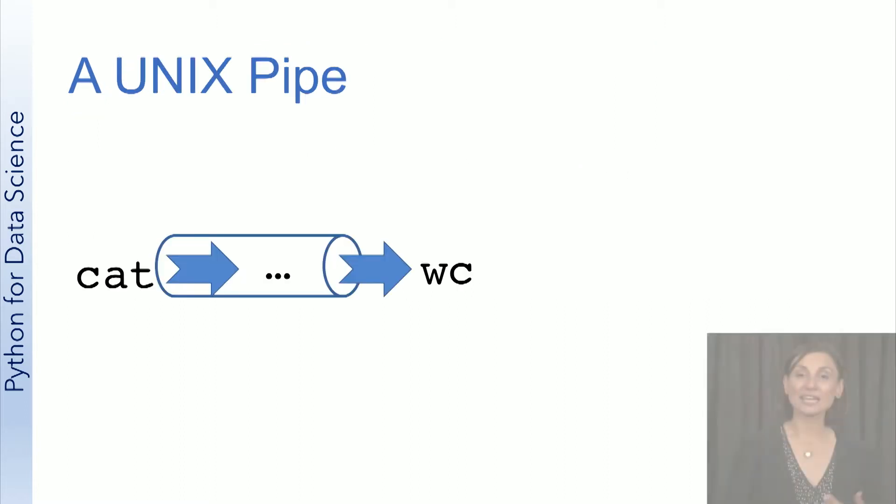Simply put, a Unix pipe is a way to send the output of one command to the input of another. In this example Unix command, we pipe the output of cat command to another Unix command that counts the lines, words, and characters in the output.